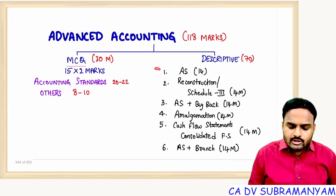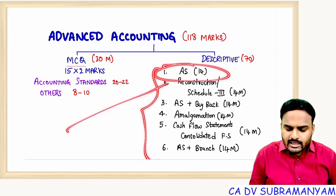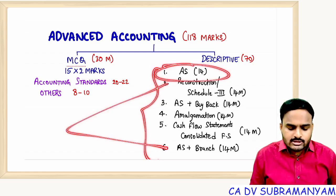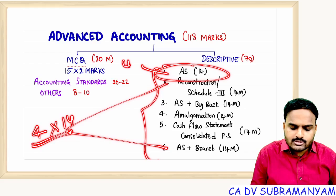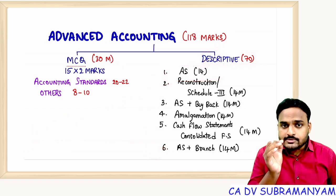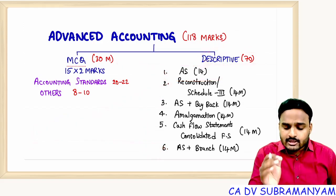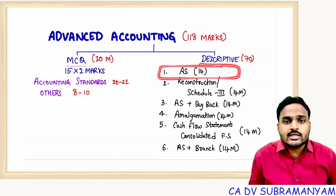Coming to the descriptive paper: you will be given 6 questions. Question 1 is compulsory and from the remaining 5 questions you need to attempt only 4. Each question carries 14 marks, so total 70 marks is for the descriptive paper. The first compulsory question will contain problems relating to accounting standards.